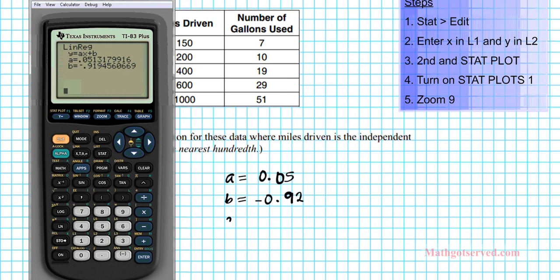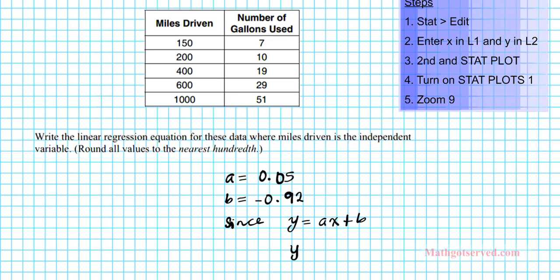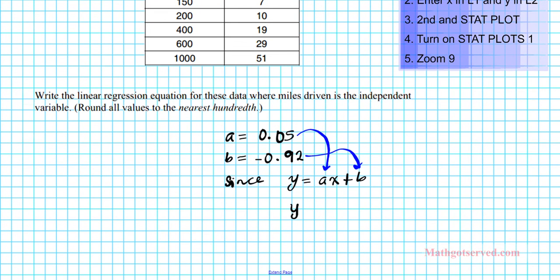So since we have Y is equal to AX plus B, our linear equation is going to be what you get when you plug A into this value right here, and then B into that. So let's go ahead and plug them in. You're going to have Y is equal to 0.05X minus 0.92. So this is your linear regression equation for the data set to the nearest hundredth. Go ahead and box that.